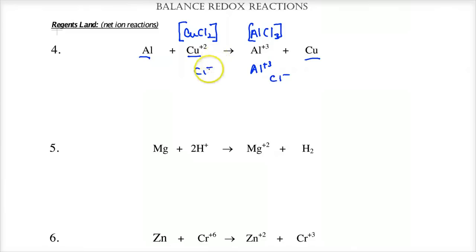What we'd do is we would get rid of the spectator ions. In this reaction, the ion just hanging around would be the chloride ion. So if you get rid of your spectator ions, you'd be left with this overall net ion reaction.